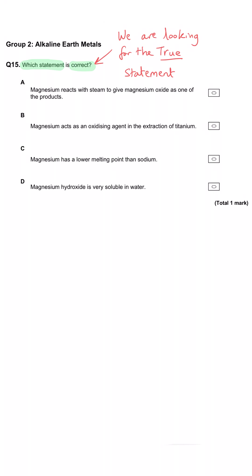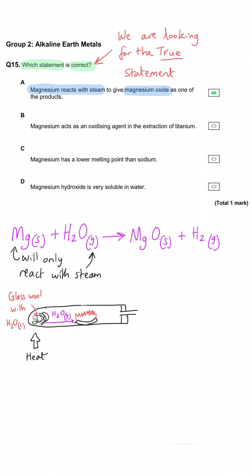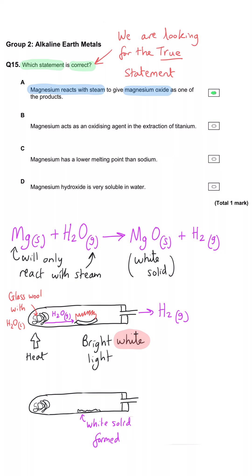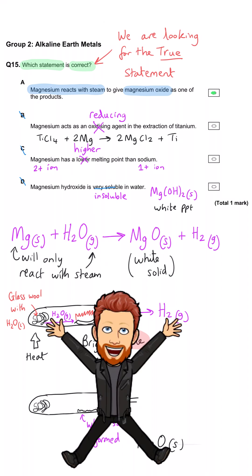Which statement is correct? Magnesium reacts with steam to give magnesium oxide as one of the products — this is the correct answer. Magnesium is not particularly reactive with cold water but does react vigorously with steam, effectively burning to produce magnesium oxide, the same white solid formed when magnesium ribbon is burnt, plus hydrogen gas from the remaining water. That means magnesium is the reducing agent (not the oxidising agent) in the extraction of titanium. So A is correct. Okay, that's the end of this video — I hope it was useful and I'll see you again soon.